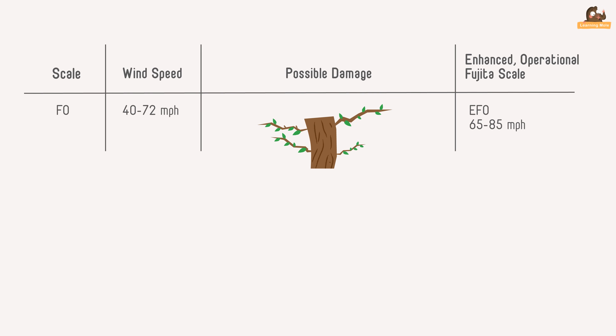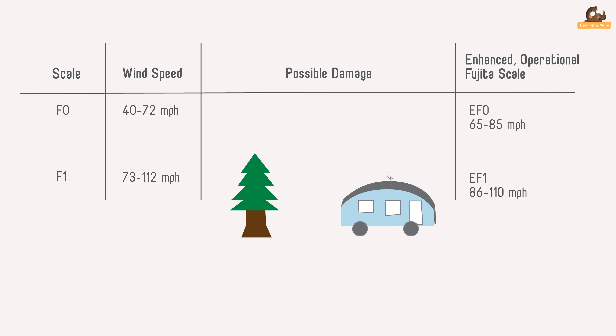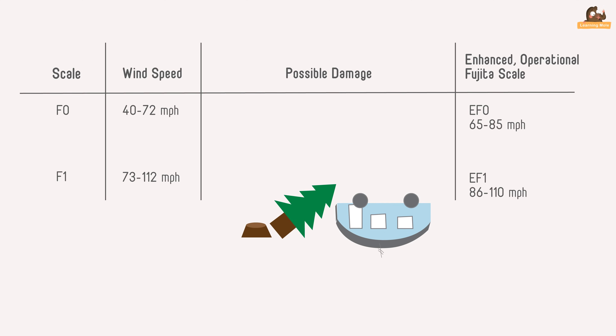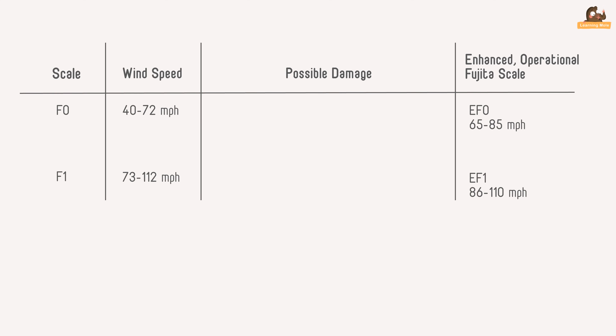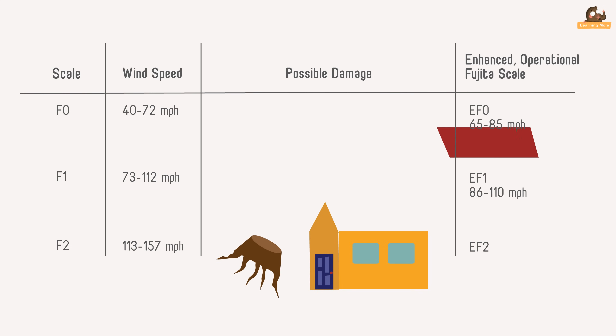Here are some examples of the different tornado categories. F0: 40 to 72 miles an hour — light damage, branches broken off trees, minor roof damage. F1: 73 to 112 miles an hour — moderate damage, trees snapped, mobile homes pushed over, roof damage. F2: 113 to 157 miles an hour — considerable damage, mobile homes demolished, trees uprooted, strong built homes unroofed.